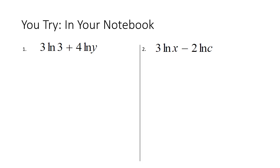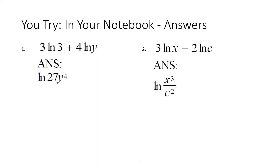Here are a couple for you to practice — go ahead and pause. Remember your three steps: one, use power property number five; two, use either product property number three or quotient property number four; and three, simplify using the least number of characters possible. Welcome back — here are the answers to check yourself. If you did not get these, please let me know or ask a peer.